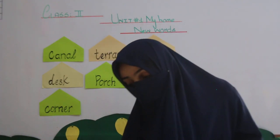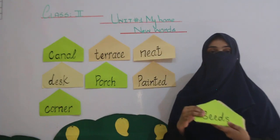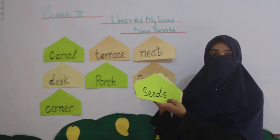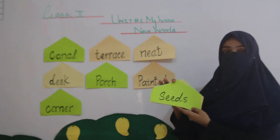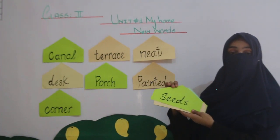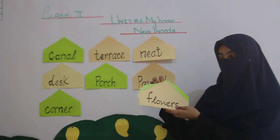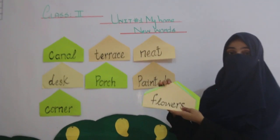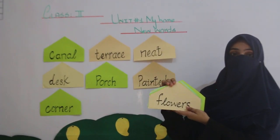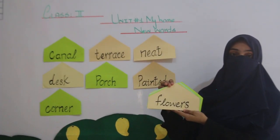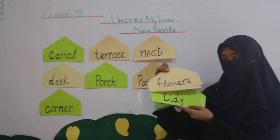The next word is Seeds. S-E-E-D-S, Seeds. Seeds means beej. Flowers, F-L-O-W-E-R-S, Flowers. Flowers means phool.